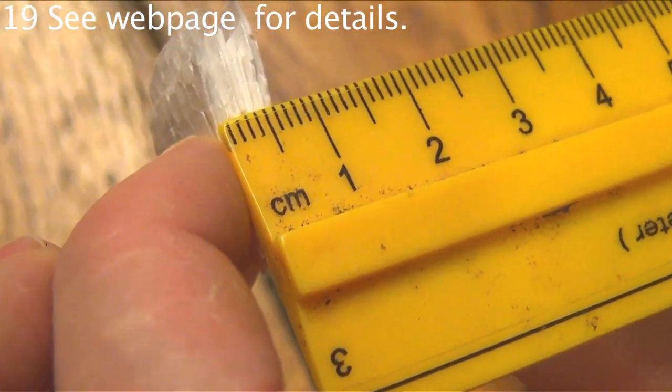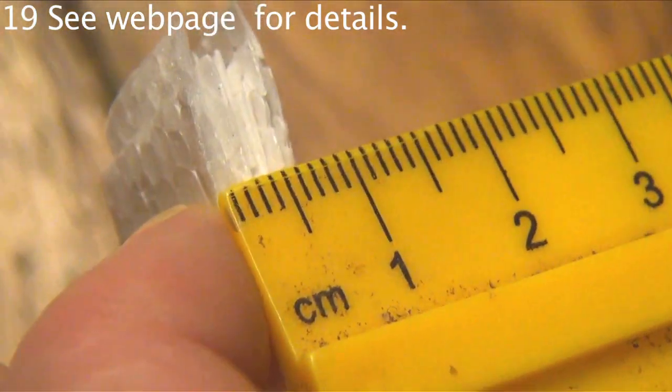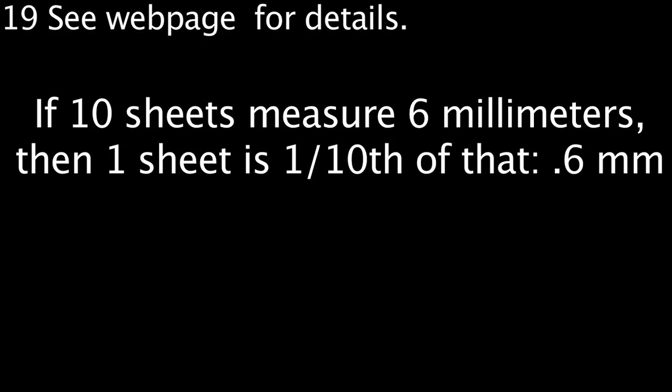If 10 sheets stacked together measure 6 millimeters, then one sheet is one tenth of that, .6 or six tenths of a millimeter.